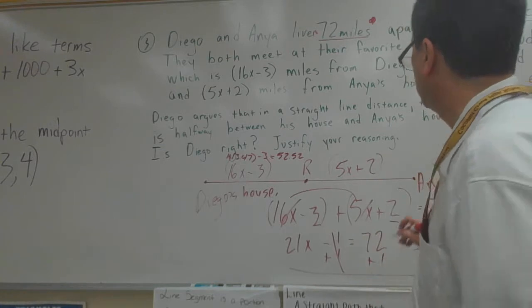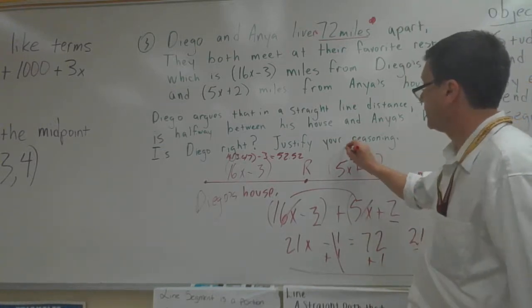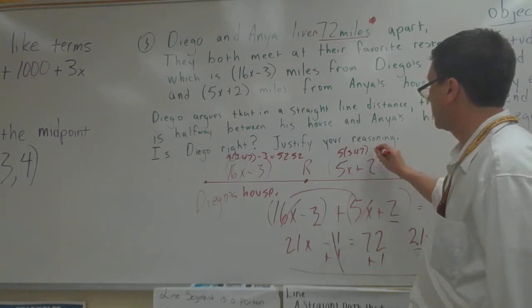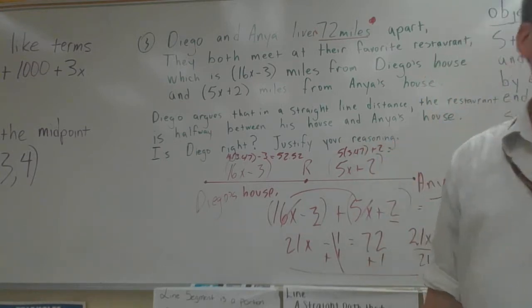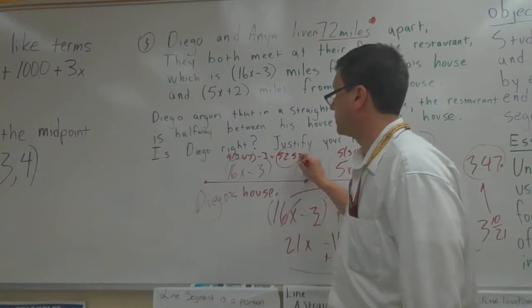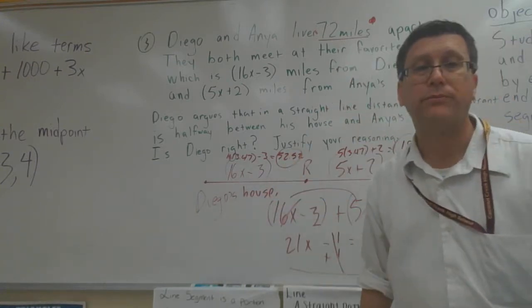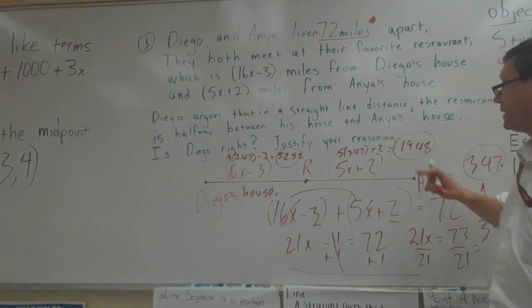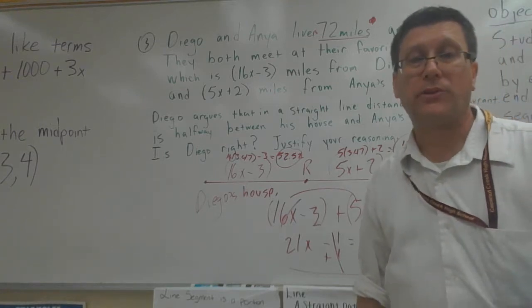And the other side is going to equal when we plug it in, 5 times 3.47 plus 2. This is going to equal 19.40. So Diego lives 52.52 miles away. Anya lives 19.48 miles away.